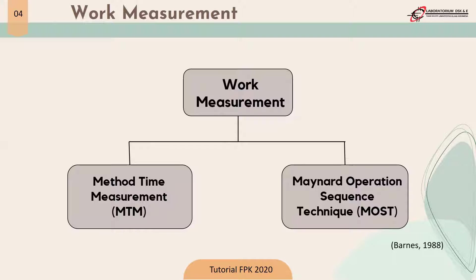A pre-determined time system measures the time of each element of movement to determine the time to complete a job by synthesizing the appropriate motion. This system is divided into two methods. The first is MTM or Method Time Measurement. MTM is the standard timeline study developed from a motion study; the analysis is based on basic movements deployed by the operators.